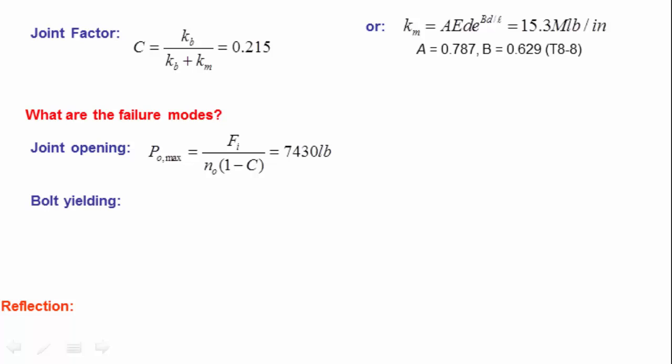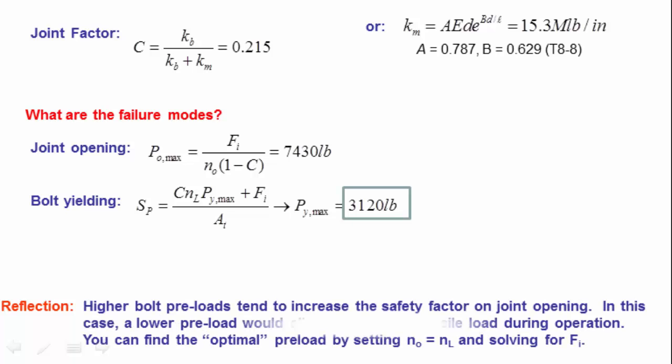Now, the other major failure mode we need to consider is that the bolt is going to yield. And in the bolt yielding, we have a formula for the proof strength being equal to C, again, the joint factor times the load factor, N sub L, again, I'll use 1.2 for that, times the max load that I can apply for yielding, plus FI divided by A sub T. Rearrange terms, plugging in the appropriate values for SP and AT and FI, and I find that the max load before yielding of my bolt will occur is 3120 pounds. So naturally, we take the smaller of those two loads as our limiting tensile load. So in this case, I can take 3120 pounds before bolt yielding occurs. I'm nowhere close to joint opening at that level.